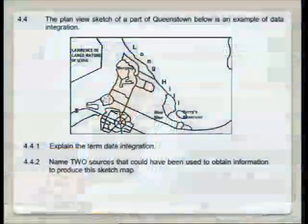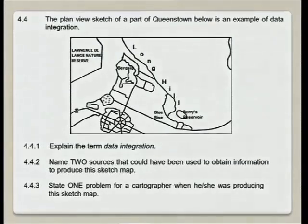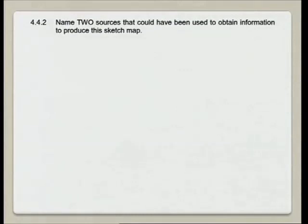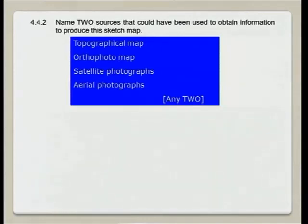Name two sources that could have been used to obtain information to produce this sketch map. Remember, it is only a sketch map, so we might have been using the topographical map at 1:50,000 scale, an orthophoto map at 1:20,000 scale, satellite photographs at approximately 1:200,000 to 1:250,000 scale, and aerial photographs ranging from 1:30,000 up to 1:100,000 scale. Any two of these — topographic map, orthophoto map, satellite photographs, or aerial photographs — could be used to draw that sketch map.